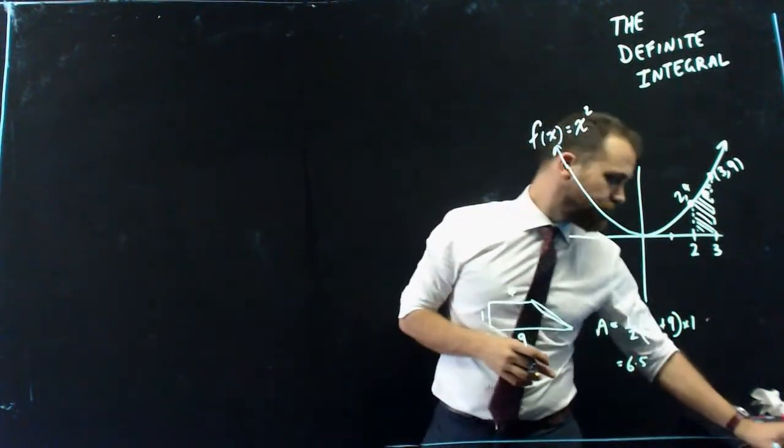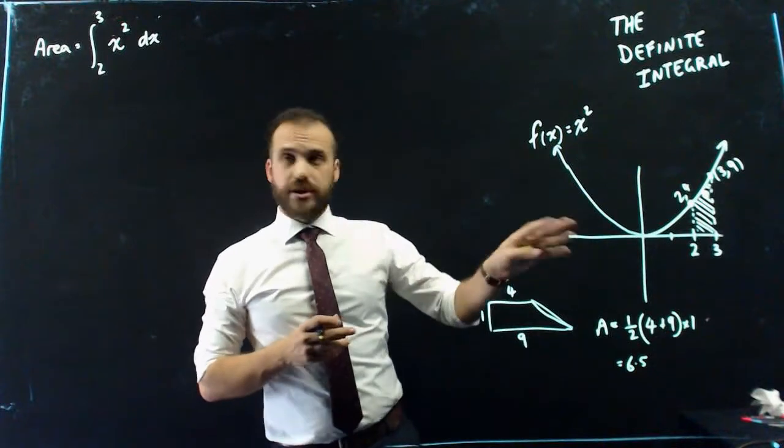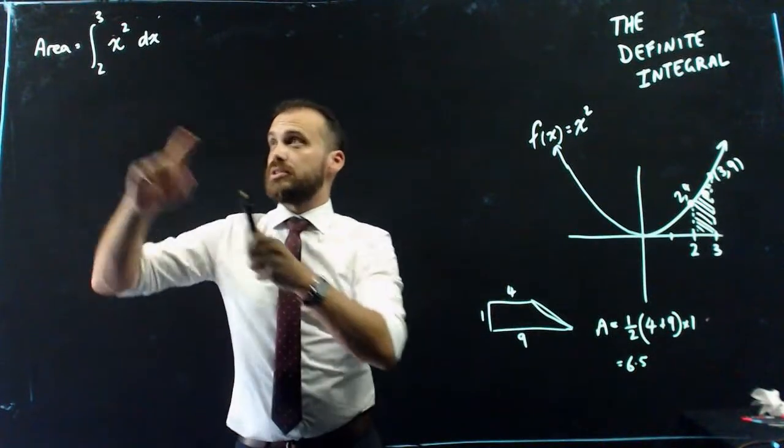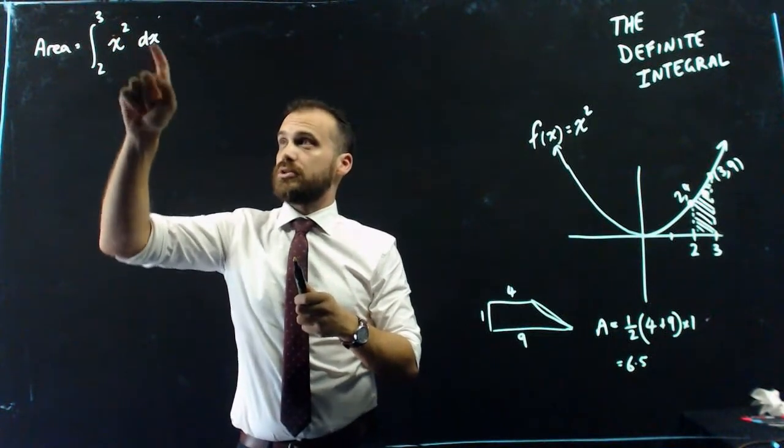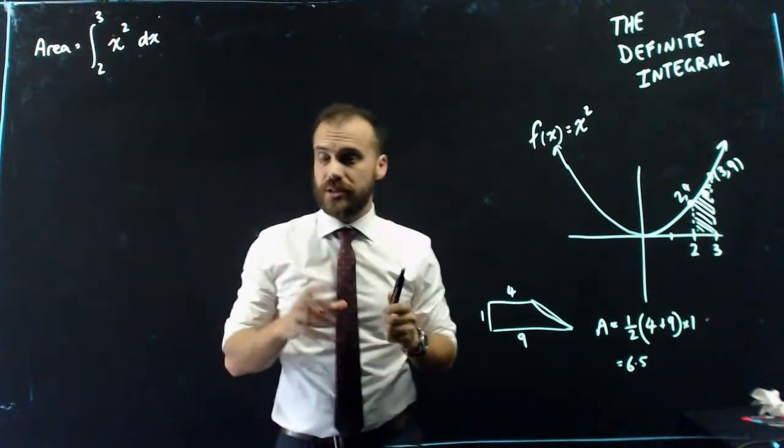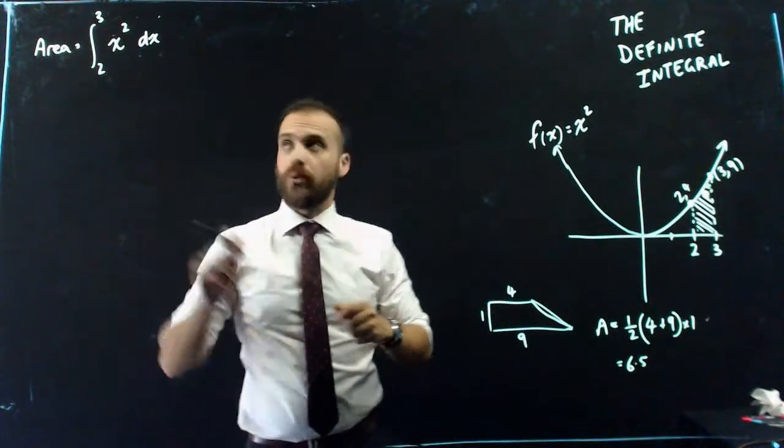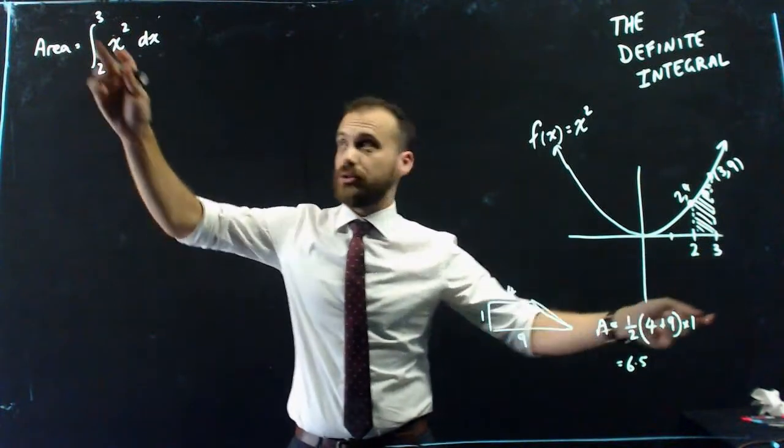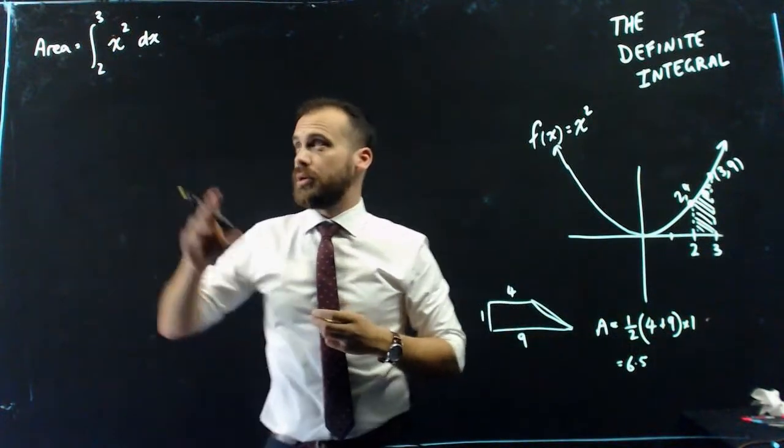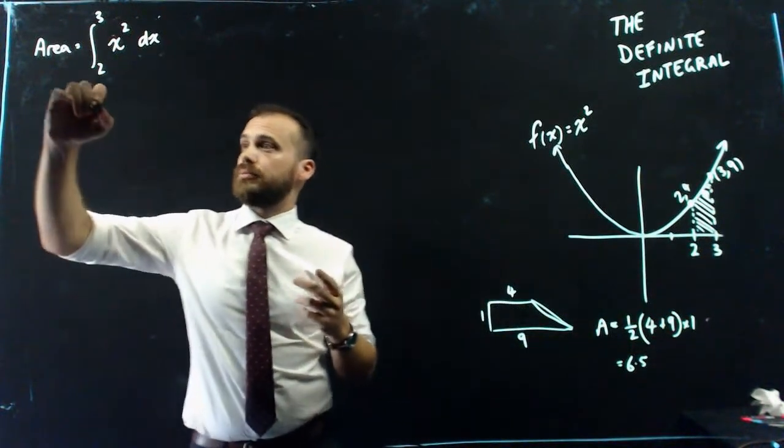All right, so the area in question here is going to be equal to this, the definite integral between 3 and 2 of x squared with respect to x. A couple of things. It's going to be important what order you put the 3 and the 2 in. So the 3 should be on the top, the larger number should be on the top, the smaller number should be on the bottom. That's it.